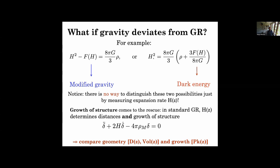Intuitively: the growth equation for density fluctuations in Lambda-CDM on sub-horizon scales contains the Hubble rate H. If I measure the expansion rate H very accurately and stick it into the growth equation, I can solve it and find the predicted time evolution of the overdensity delta. So given measurements of expansion history in general relativity, I get a very good prediction of growth. I can then go and measure growth and see whether it agrees with GR predictions. In practice you'd combine probes, but that's the principle.